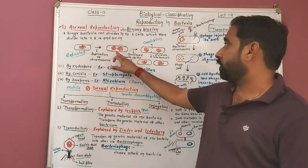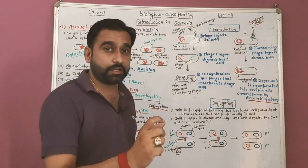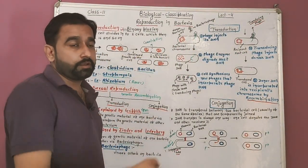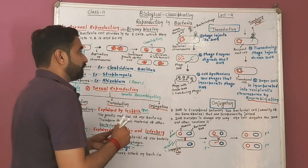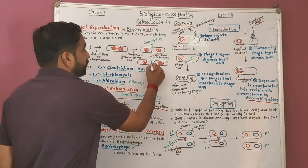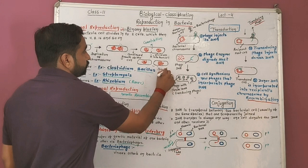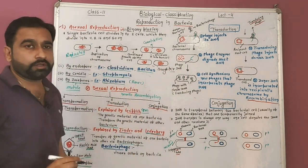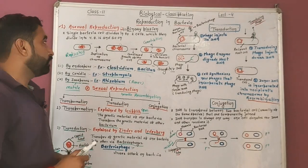After replication, karyokinesis occurs, then constriction occurs, the cytoplasm divides, and two daughter cells are formed. So by binary fission, two daughter cells are formed.